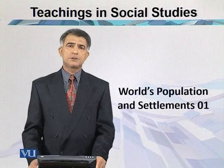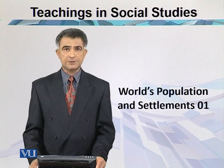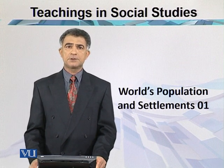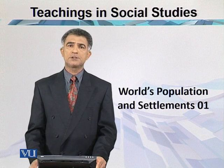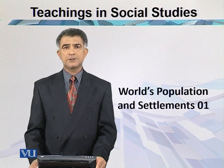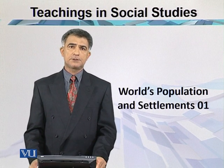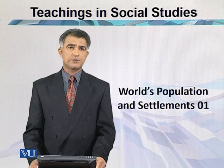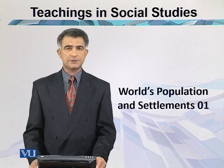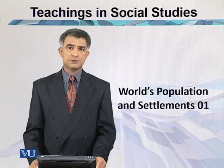The human population of the world is unevenly distributed over the Earth's surface. There are certain factors which are controlling the distribution of the human population. One of the factors is climate, second is relief feature, third is location, and other areas are also important. But these are the major factors which are controlling human population distribution.